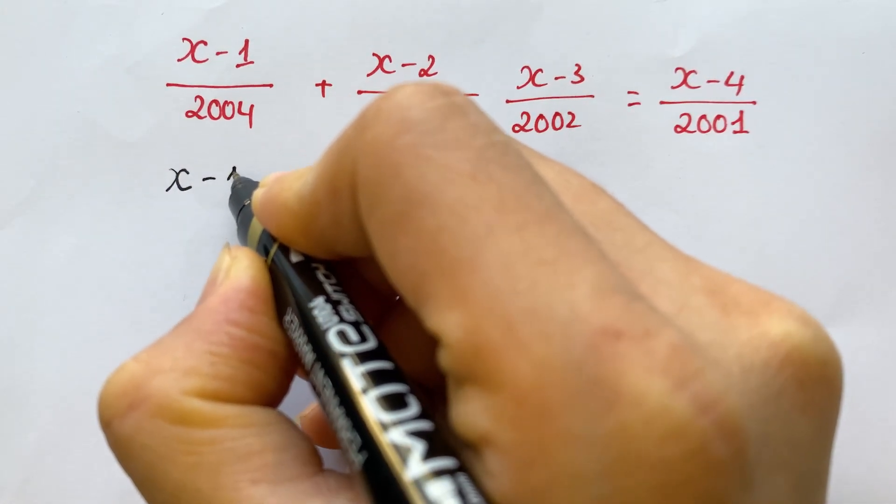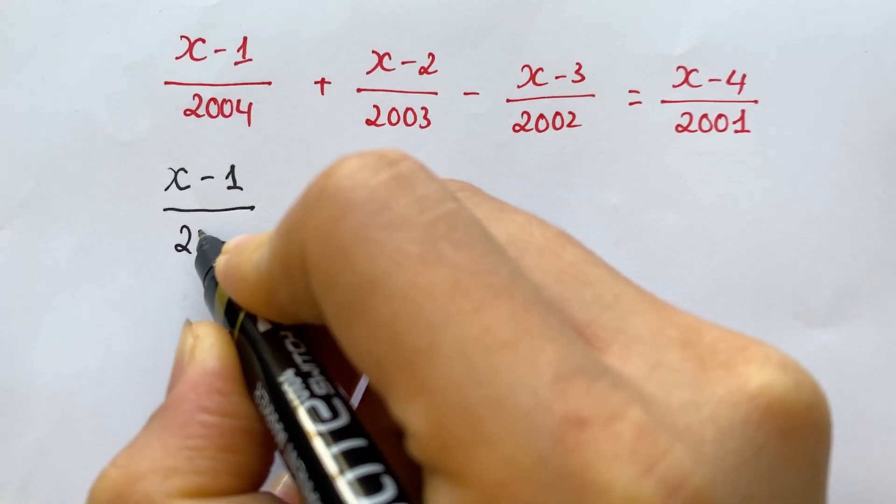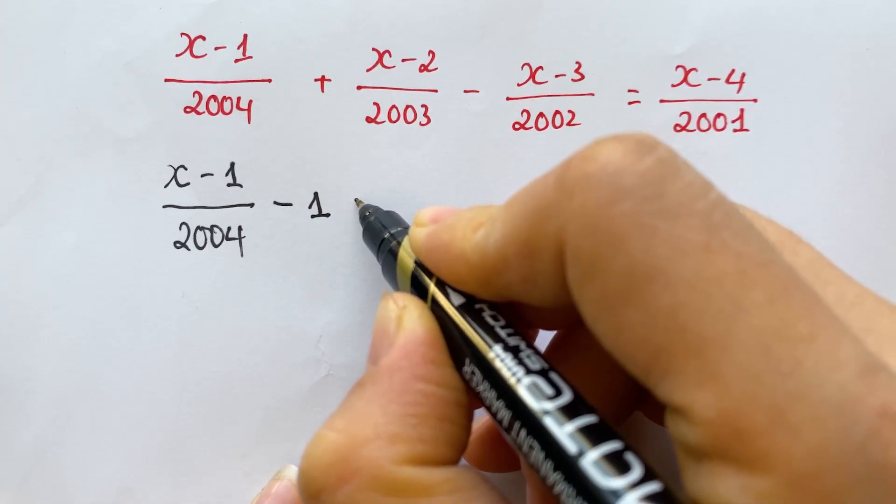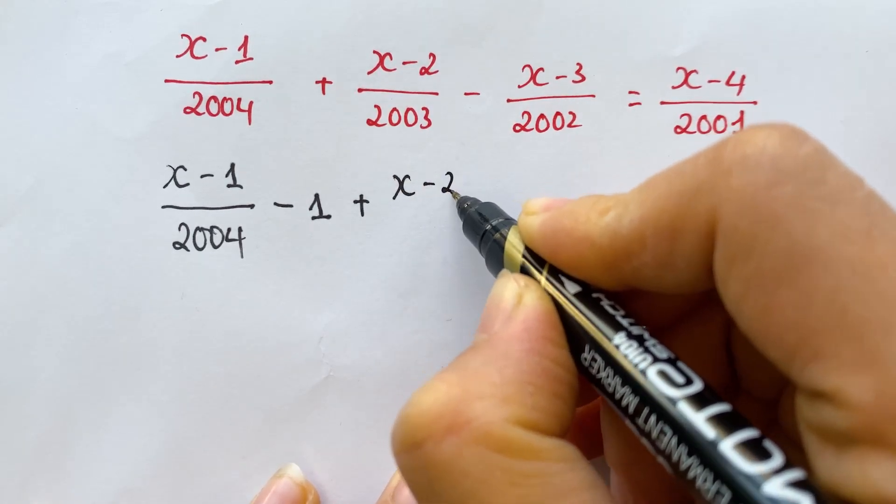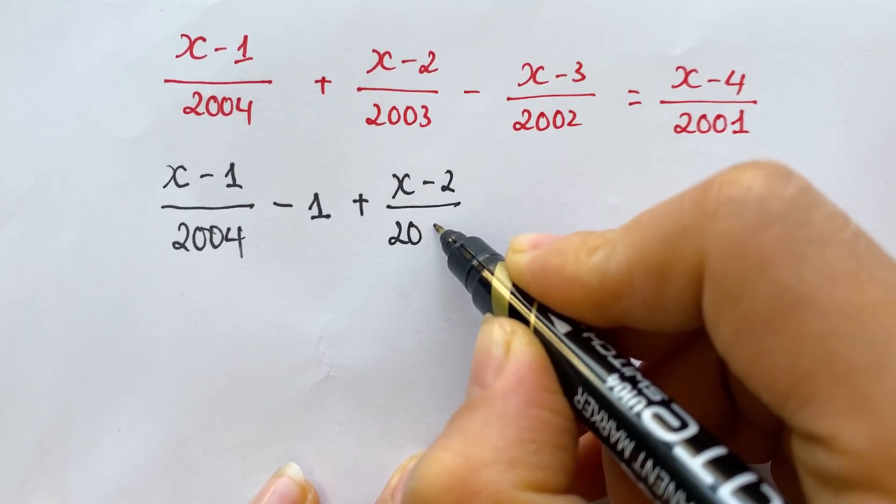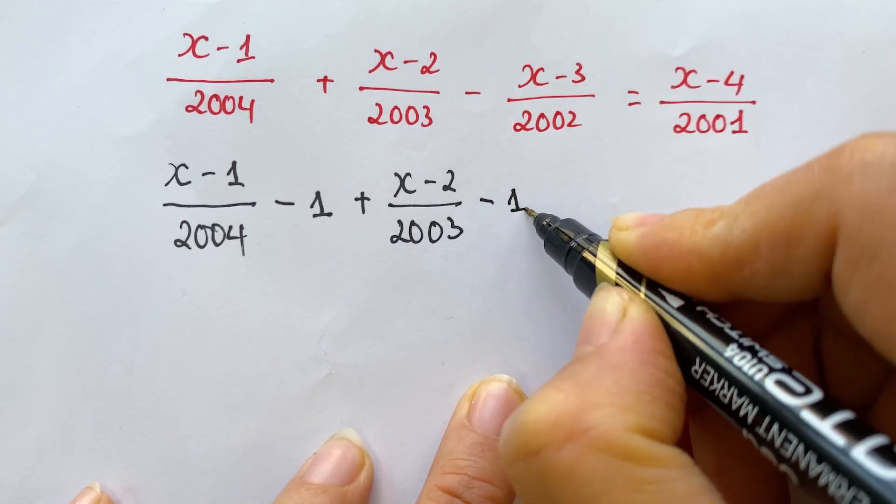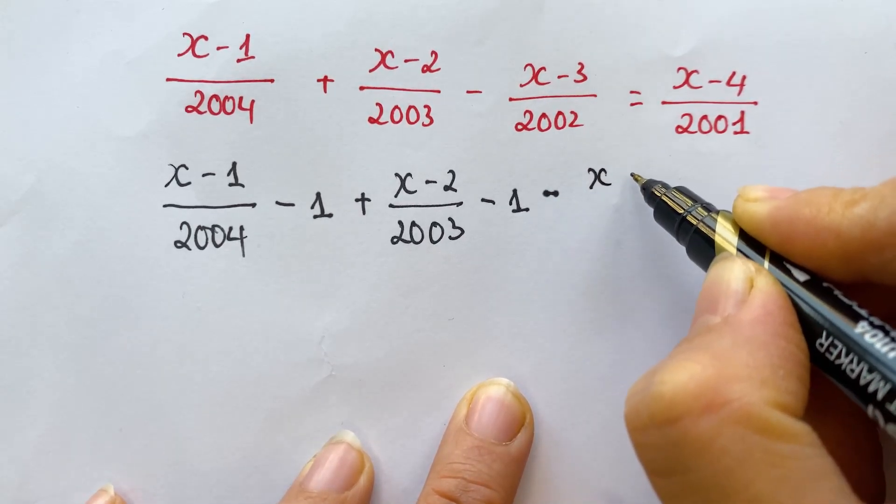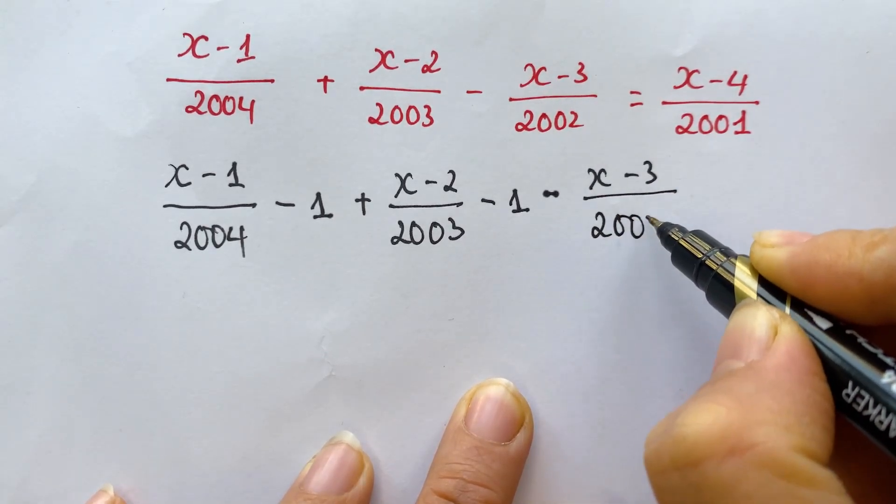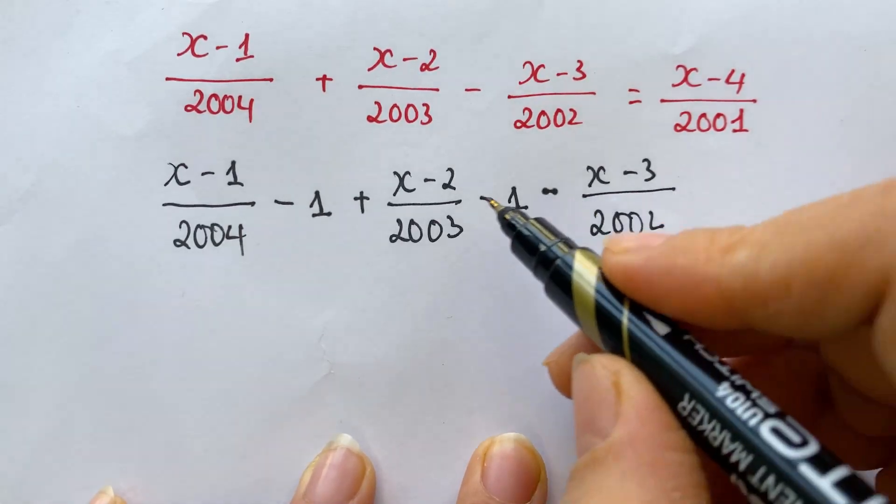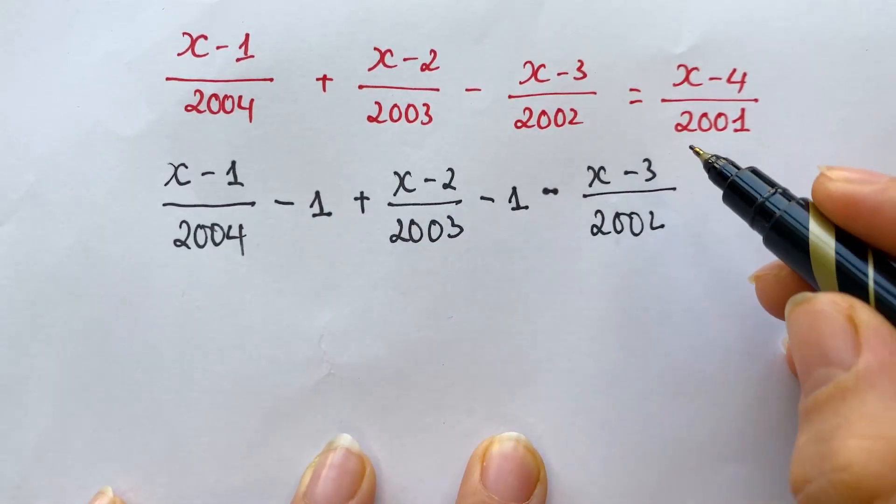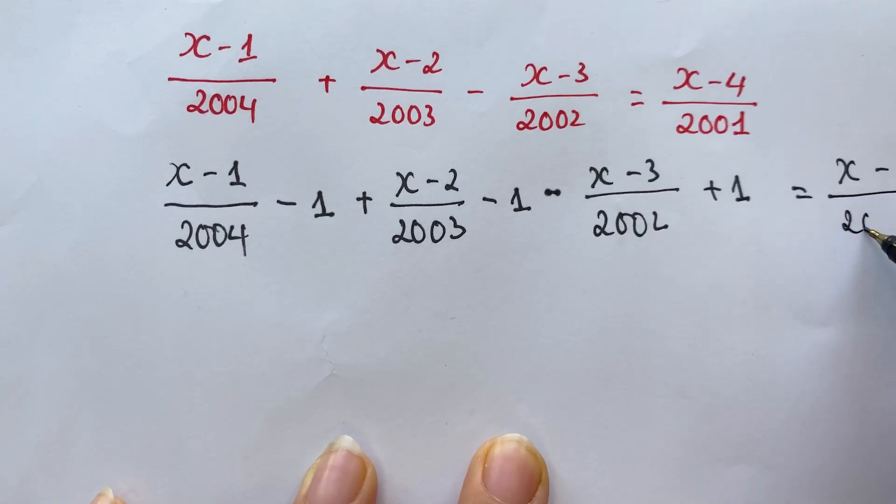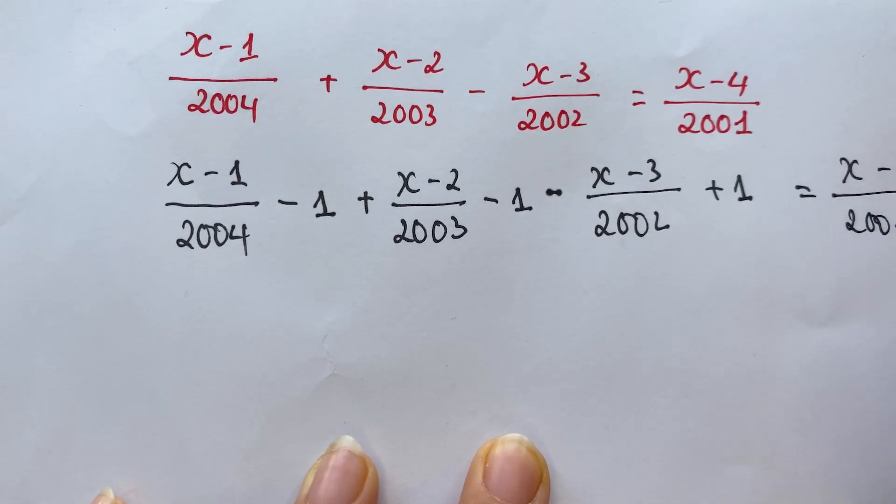we can have x minus 1 over 2004, and then we subtract 1 from each term. Therefore, we have minus x minus 3 over 2002. So when you subtract from the negative term, you need to plus 1, and then it equals x minus 4 over 2001, and minus 1.